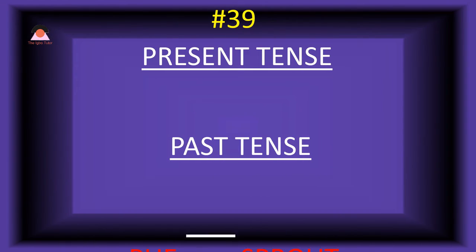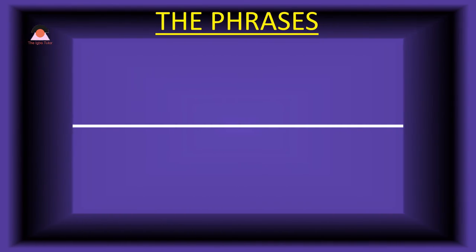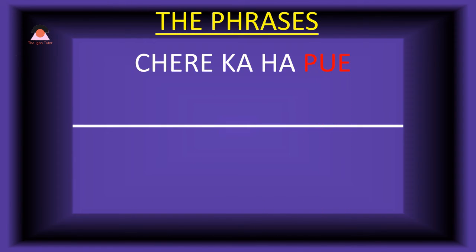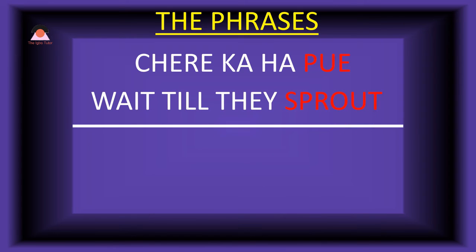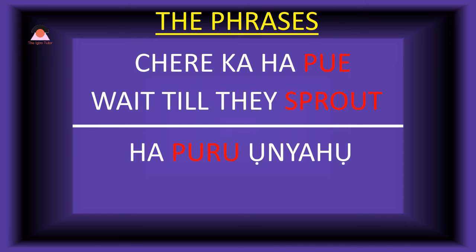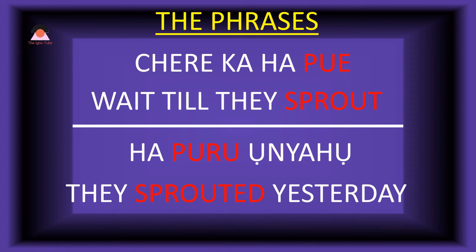Word number thirty-nine: 'pue,' meaning 'sprout.' The past tense of pue is 'puru,' meaning 'sprouted.' Present tense phrase: 'chereka ha pue' — wait till they sprout. Past tense: 'ha-puru n'aho' — they sprouted yesterday.